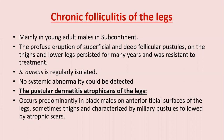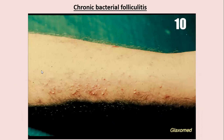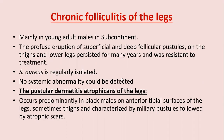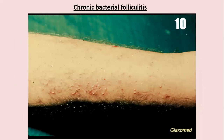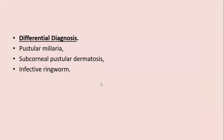A slightly aggravated form is pustular dermatitis atrophicans of the legs, occurring predominantly in black males on the anterior tibial surface, sometimes the thighs, characterized by miliary pustules followed by atrophic scars. Chronic bacterial folliculitis on the leg shows many pustular and papular lesions with a prolonged history, and treatment is generally ineffective.